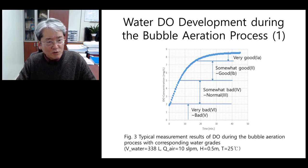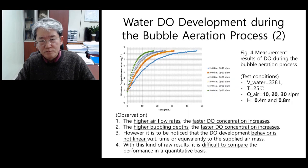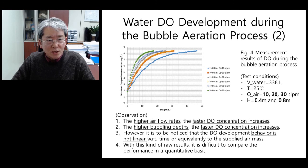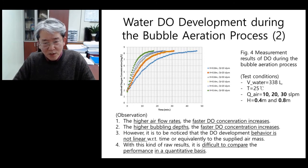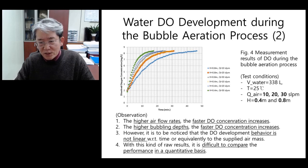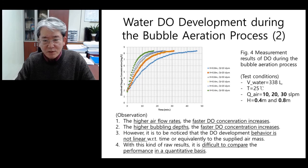In order to address this ambiguity, we suggest the use of a concentration range in this study. Figure 4 shows the measurement results of DO for each test condition. As can be seen, the higher the air flow rate, the faster the DO concentration increases. The higher the bubbling depth, the faster the DO concentration increases. However, it is to be noticed that the DO development behavior is not linear with respect to time or equivalently to the supplied air mass. With this kind of raw results, it is difficult to compare the performance on a quantitative basis.